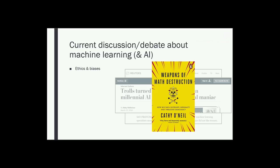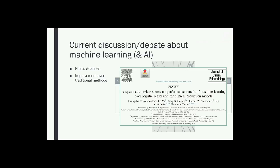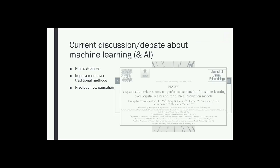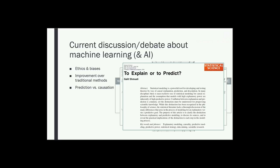If you've not read the book 'Weapons of Math Destruction' by Kathy O'Neill, I highly recommend it. She discusses how big data combined with the increasing use of algorithms in modern societies is contributing to inequality and threatening democracy. There's also debate about the degree to which machine learning methods really offer an improvement over standard statistical methods — a systematic review found that machine learning methods for clinical prediction were no better than simple logistic regression models. But the main topic of my talk is about the conflation of prediction and causation, and its implications aren't recognized widely enough in health research.